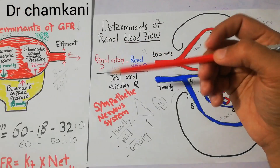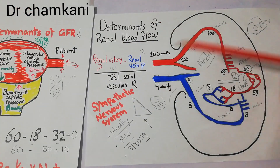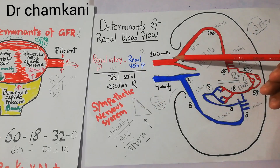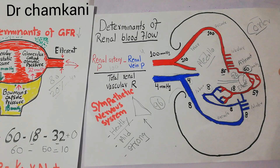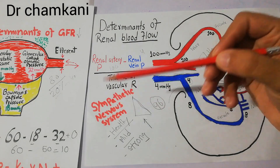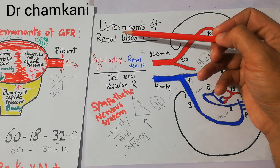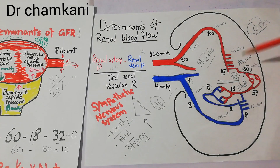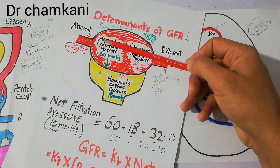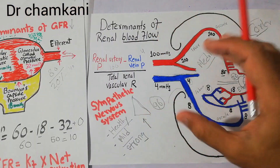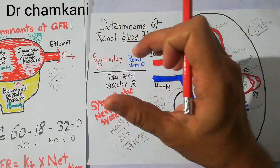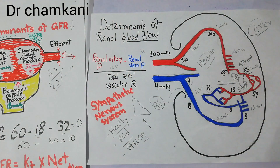The sympathetic system acts as a determinant of renal blood flow by increasing or decreasing resistance at the afferent or efferent arterioles. It has some effect on other blood vessels like the interlobar, arcuate arteries, and renal veins, but the site of maximum impact are the afferent and efferent arterioles. When resistance increases, glomerular hydrostatic pressure decreases, filtration decreases, and that is how activation of the sympathetic system correlates with a decrease in GFR.